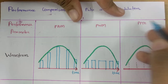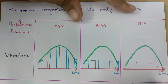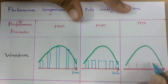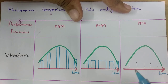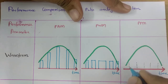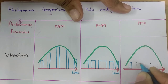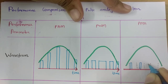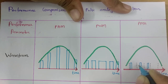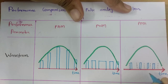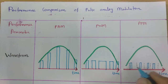Now when we talk about Pulse Position Modulation, the position of the pulse will change with respect to the modulating signal. These black color dash lines are the reference positions. So position of pulse will change with respect to the reference. Where amplitude is less, position of pulse will be at one edge. As amplitude increases, position of pulse will move nearer to center, and it will go towards the other edge. As amplitude decreases again, position of pulse will change accordingly, as shown in the figure.